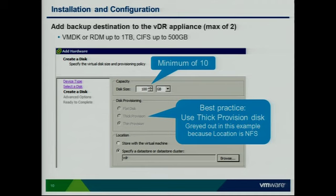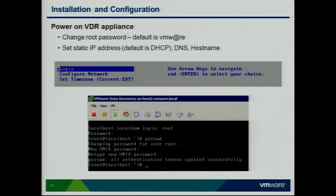Once you power on the VDR appliance and look at the console, you have options like Configure Network, Log In, and Set Time Zone. Make sure you set the correct time zone — you could run into issues if your vCenter server and VDR appliance are in different time zones. You can also log in to update the password; the default password is noted on the slide. Use a static IP address and make sure DNS is set up properly — short name, long name, both directions.